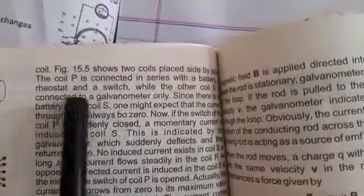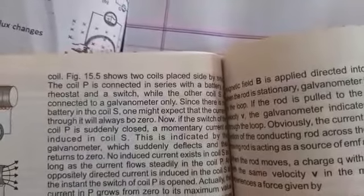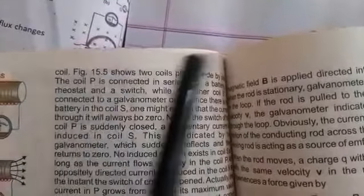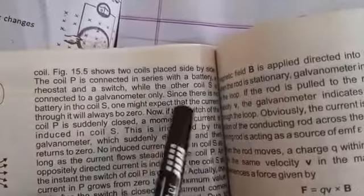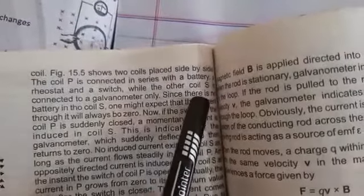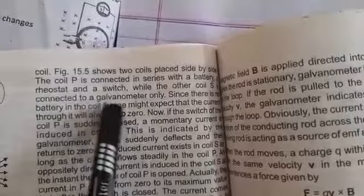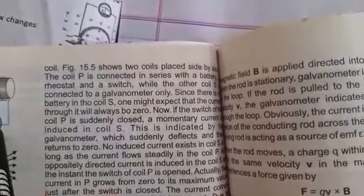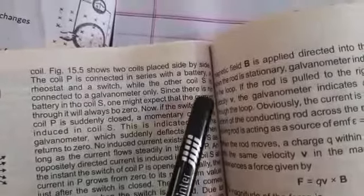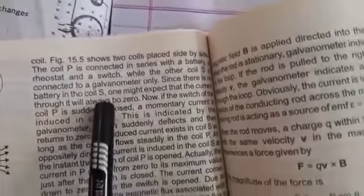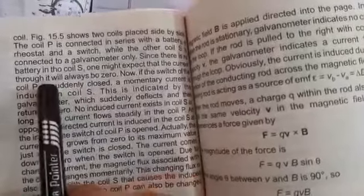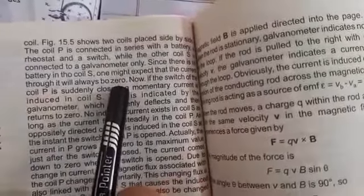A rheostat and a switch, battery and switch or rheostat, a primary coil, while the other coil S is connected to a galvanometer only. Since there is no battery in the coil S, one might expect that the current through it will always be zero.